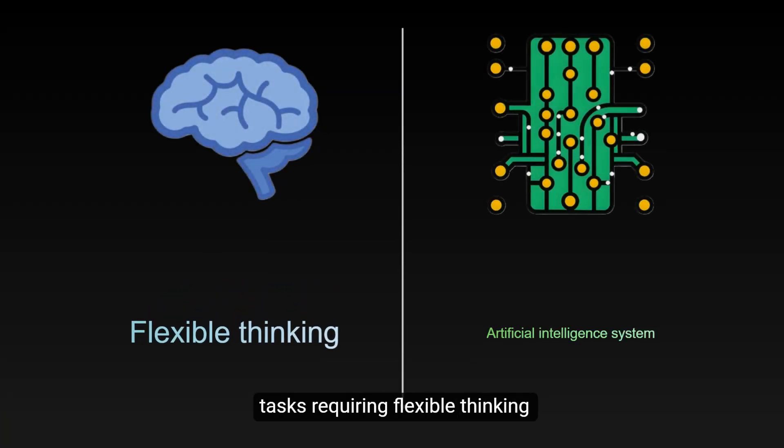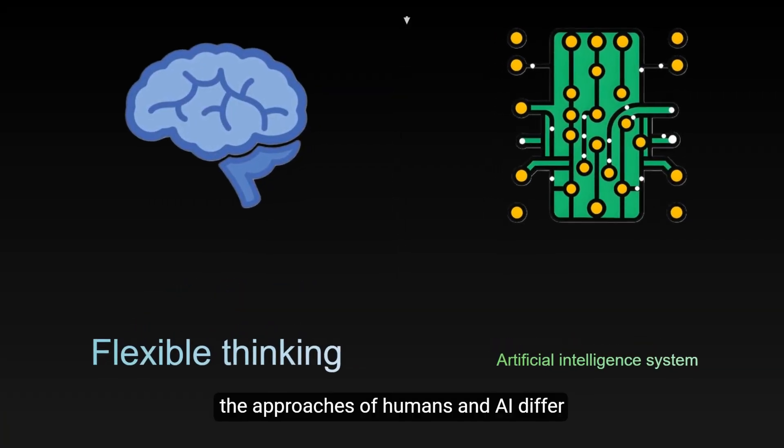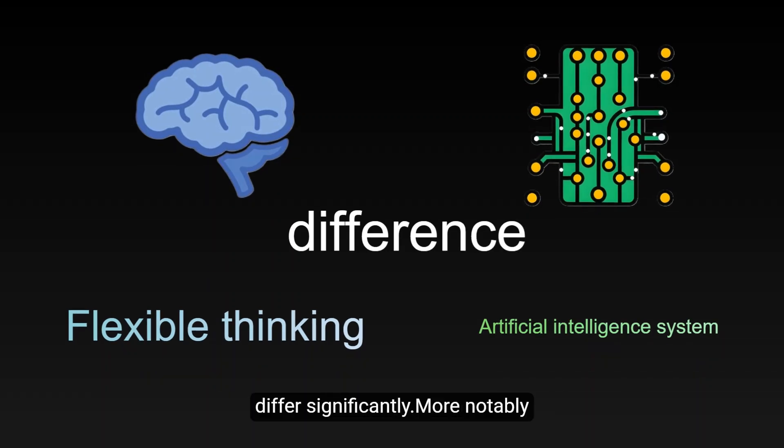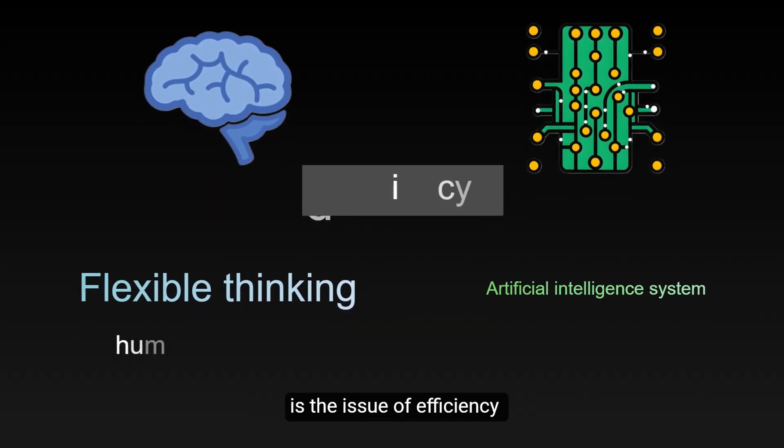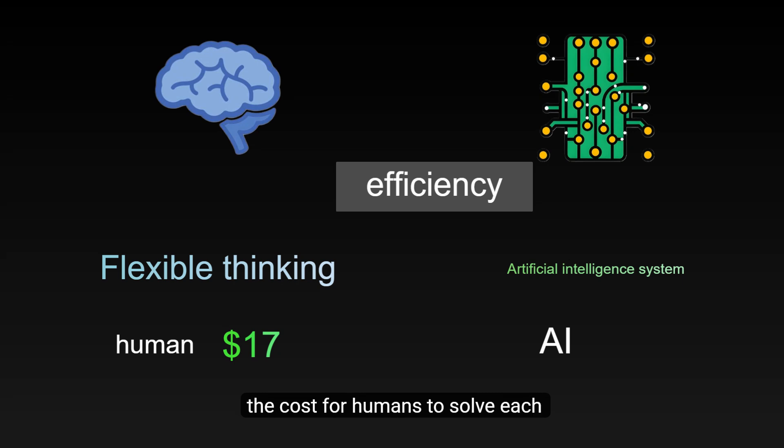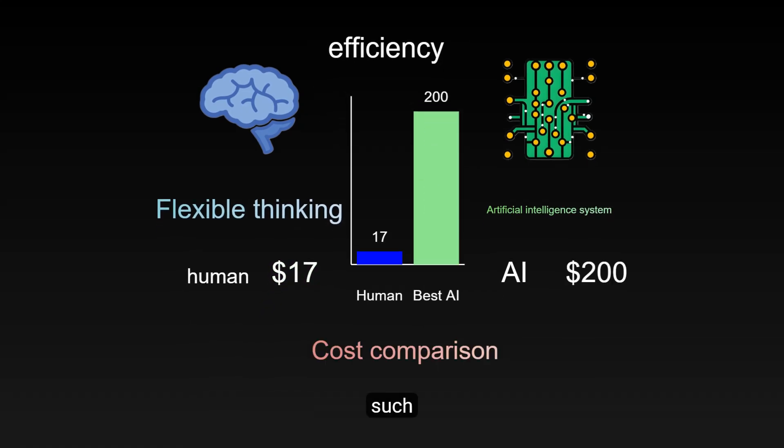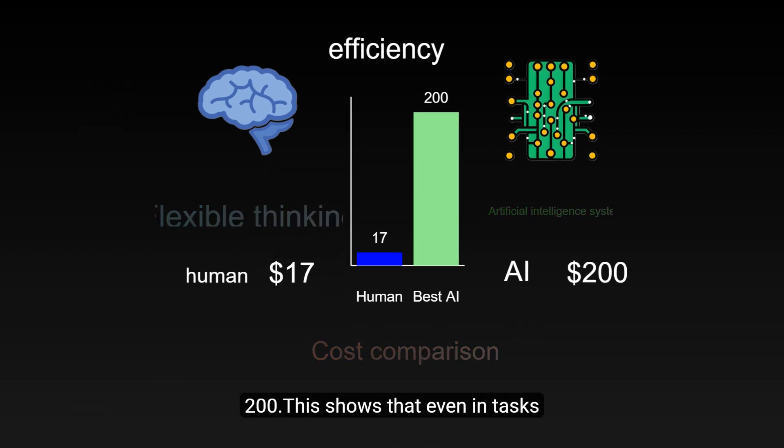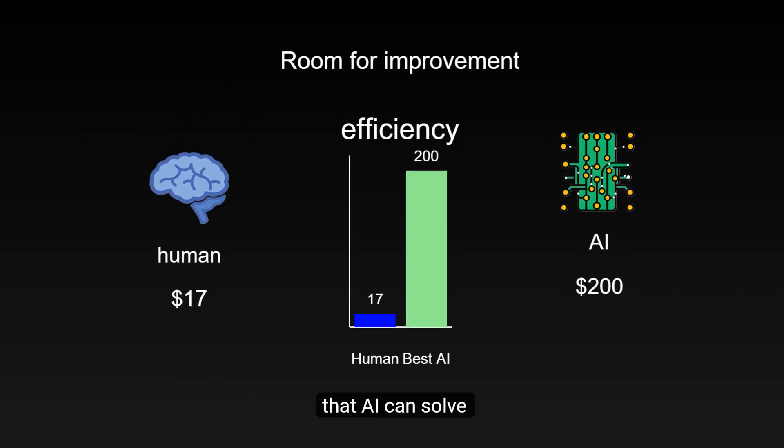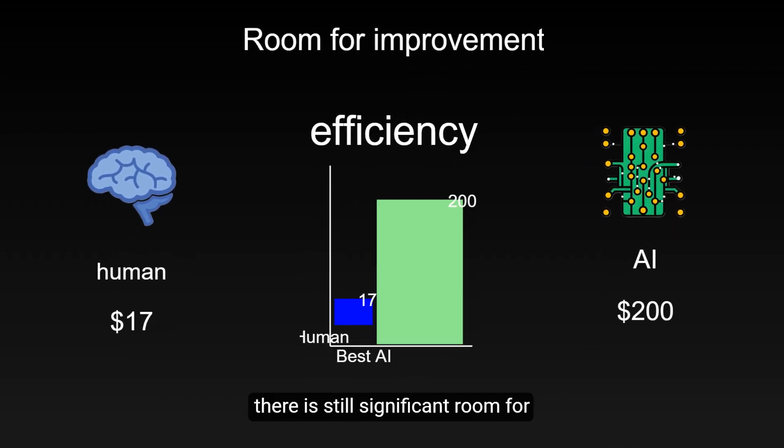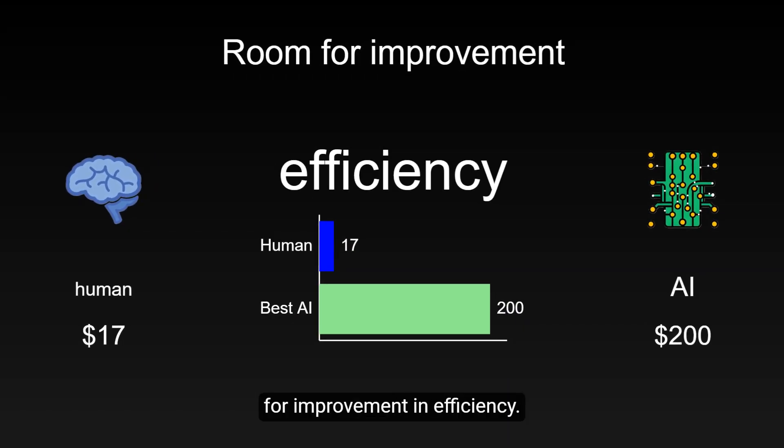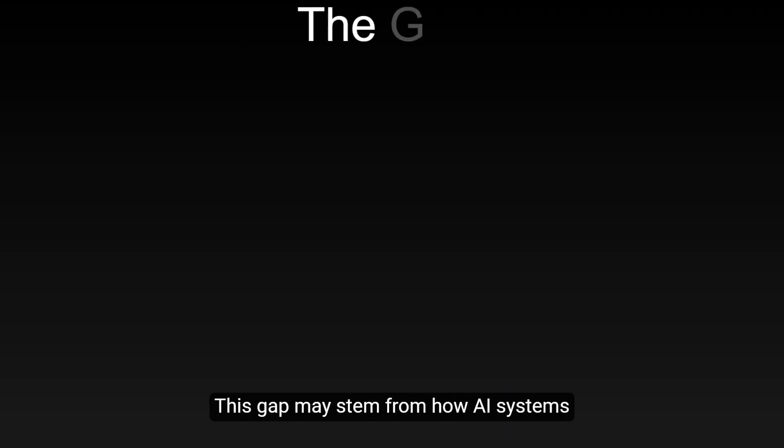These examples illustrate that for tasks requiring flexible thinking, the approaches of humans and AI differ significantly. More notably is the issue of efficiency. The cost for humans to solve each task is approximately $17, while using high-end AI systems such as O3 Low and O1 Pro costs $200. This shows that even in tasks that AI can solve, there is still significant room for improvement in efficiency.